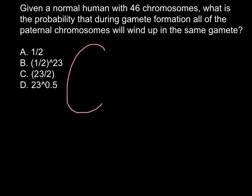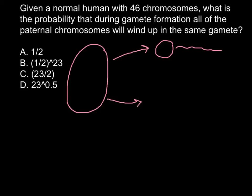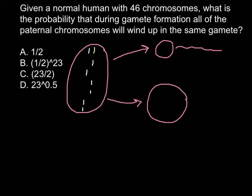Imagine that this is a germline cell. A germline cell can produce two types of gametes: sperm, if it is a germline cell in the male, or egg cells, if it is a germline cell of the female — and I will use this for my example. So a germline cell is diploid, meaning it has two sets of chromosomes, half of them derived from the father's side and half from the mother's side, and during meiosis...